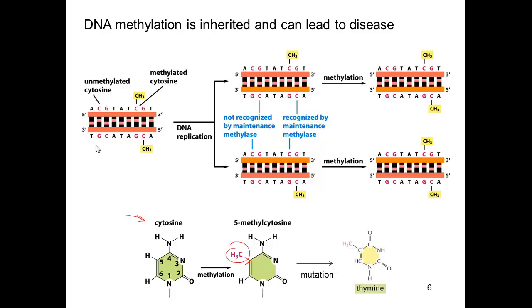This methylation status can get inherited, which is why it's referred to as epigenetics. Consider the case where you have fully methylated DNA. Since CpG islands are palindromic, both strands are methylated.